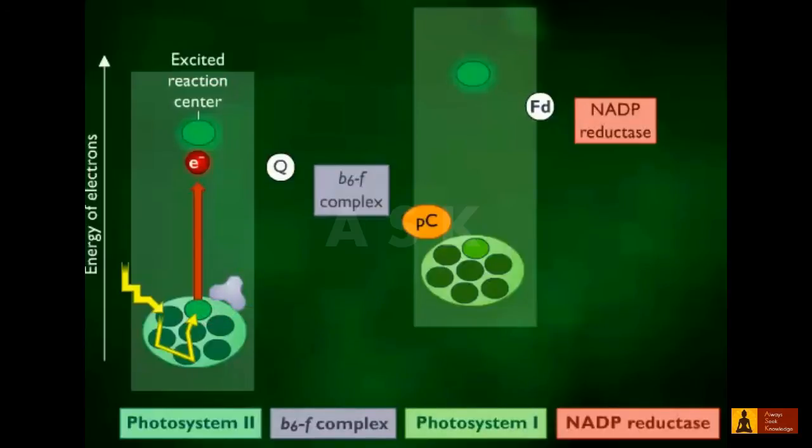The electron then travels from the excited reaction center of Photosystem II to plastoquinone, to the b6f complex, to plastocyanin, and finally to the reaction center of Photosystem I. This electron transport system generates a proton motive force that is used to produce ATP. Since the excited electron does not return to Photosystem II, this mechanism for making ATP is called non-cyclic photophosphorylation.